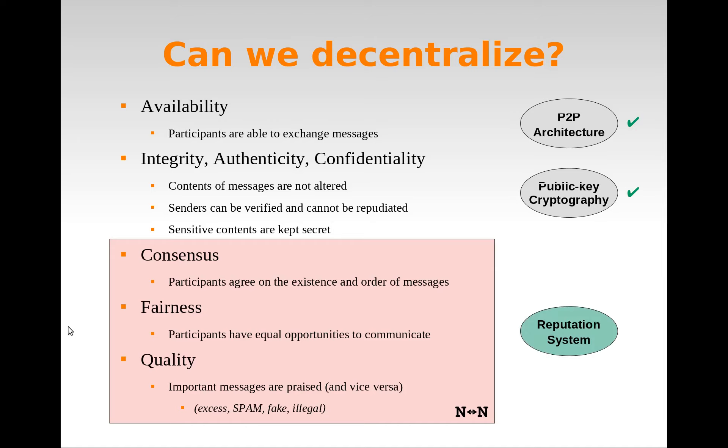To answer these questions, we propose with FreeChains a decentralized reputation system for messages and authors. The participants evaluate messages with likes and dislikes, and the reputation system is applied automatically by the protocol, possibly blocking certain messages and highlighting others.